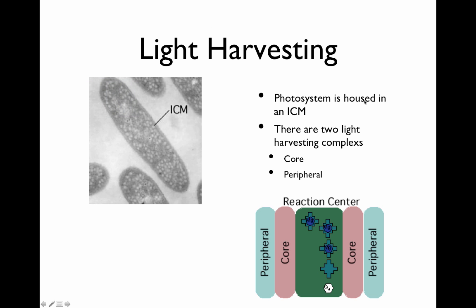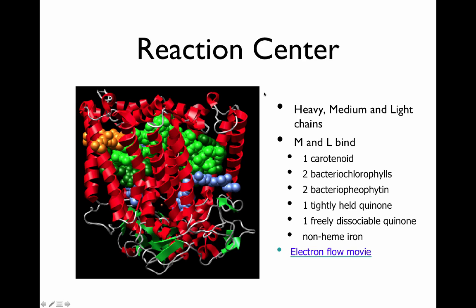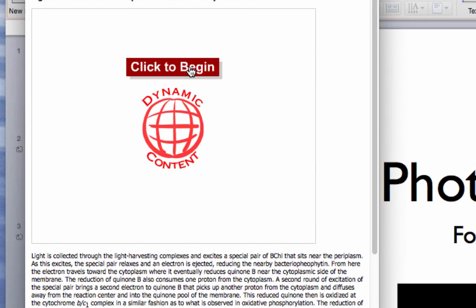Their photosystem is housed in an intracytoplasmic membrane, which is actually invaginations of the cellular membrane. There are two light harvesting complexes: a peripheral complex and a core complex, which focus light energy onto the reaction center. The reaction center has heavy, medium, and light chains. The medium and light chains contain carotenoids, bacterial chlorophylls, bacterial pheophytins, some tightly held quinones, one freely dissociable quinone, and a non-heme iron.